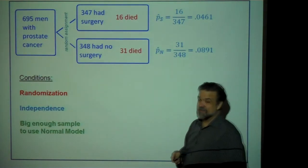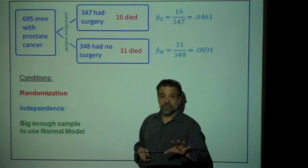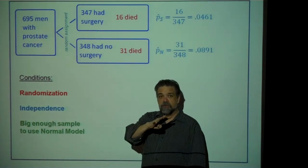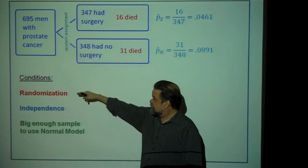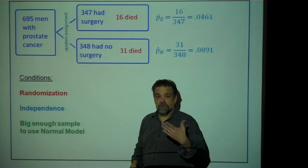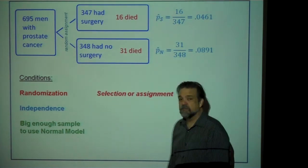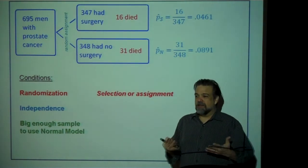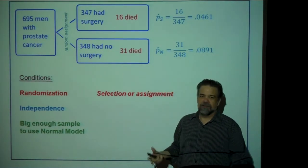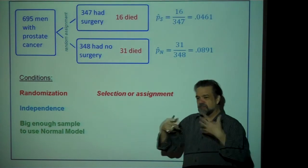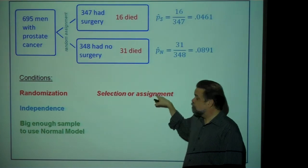We breezed over our conditions — let's go back and check them. For two-proportion hypothesis tests, we need the same three conditions as one-proportion tests. First, randomization: we didn't randomly select people and give them prostate cancer, but we did randomly assign them to groups. Random assignment is just as good as random selection.